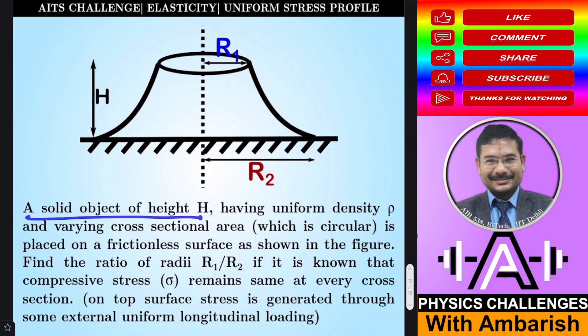A solid object of height h having uniform density ρ and varying cross sectional area which is circular is placed on a frictionless surface as shown in the figure. So here is some solid, it could be a tall shaft also and we want that it should be having the same stress everywhere.